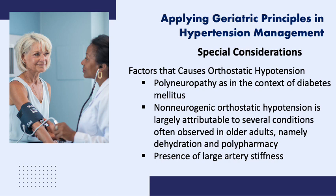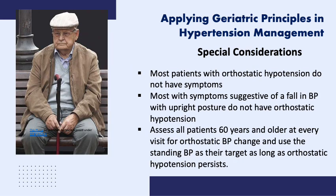Arterial stiffness is also implicated in the increased variability in blood pressure observed in several conditions, such as exercise — both increases and decreases in blood pressure are exaggerated in individuals with pronounced arterial stiffness — and between-visit blood pressure variability. Also, most patients with orthostatic hypotension of 20 over 10 mmHg or greater after 2 to 3 minutes of standing do not have symptoms, and most with symptoms suggestive of a fall in blood pressure with upright posture do not have orthostatic hypotension. It is recommended to assess all patients 60 years and older at every visit for orthostatic blood pressure change, seated to standing, and use the standing, not seated, blood pressure as their target as long as orthostatic hypotension persists.